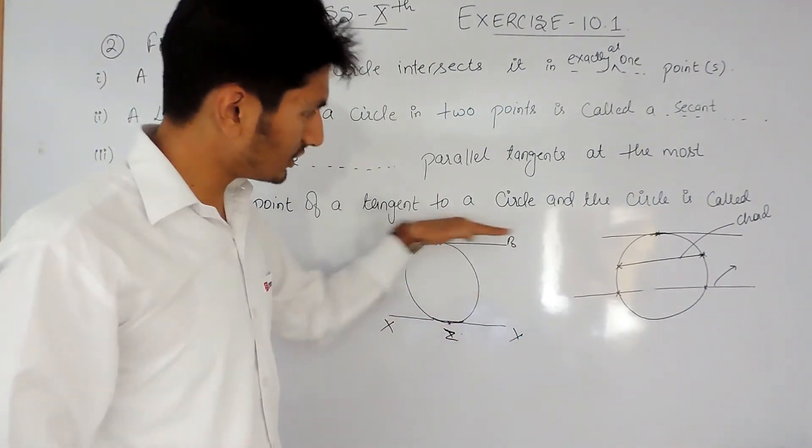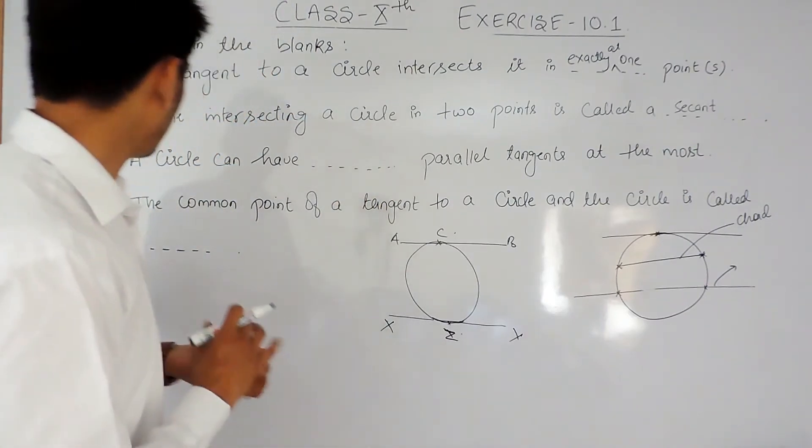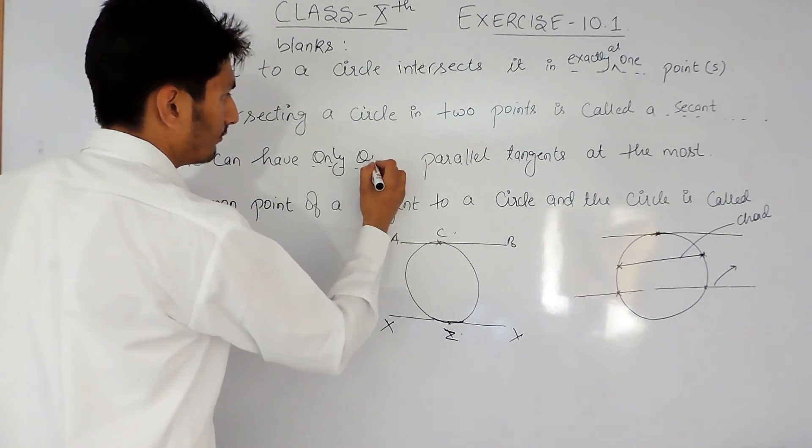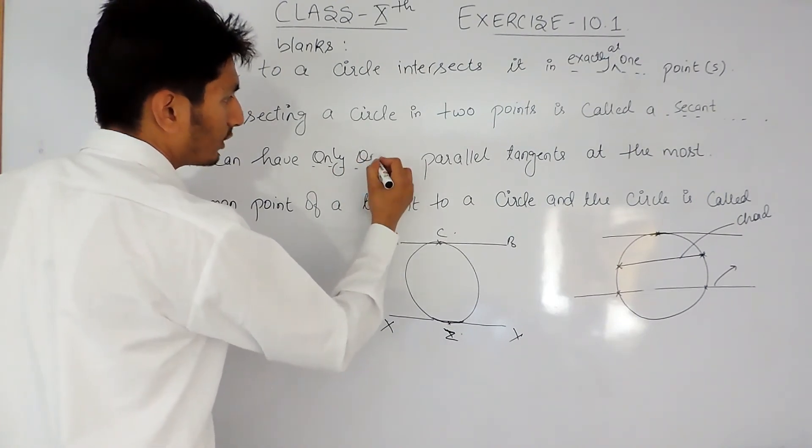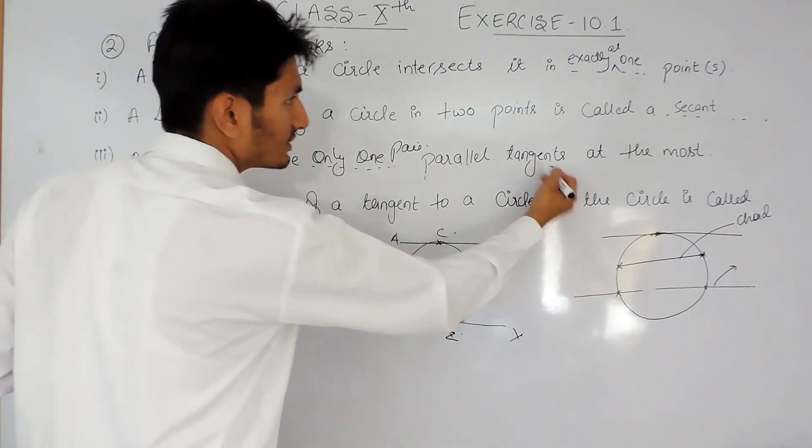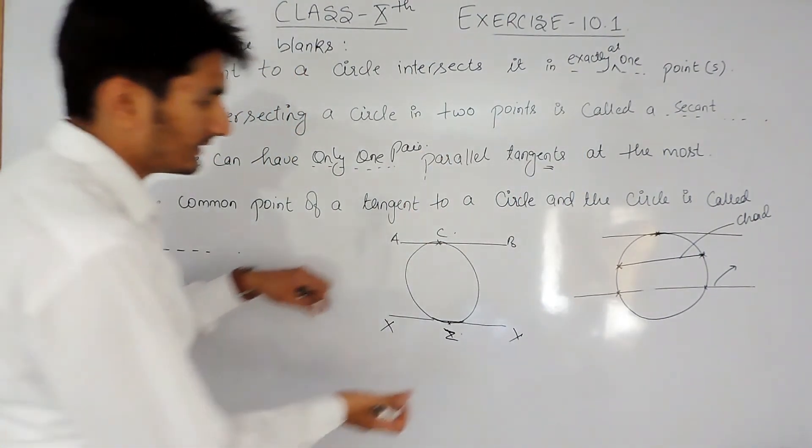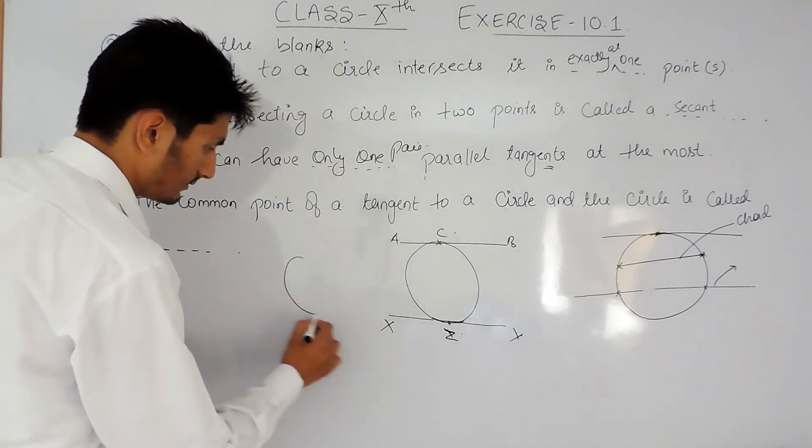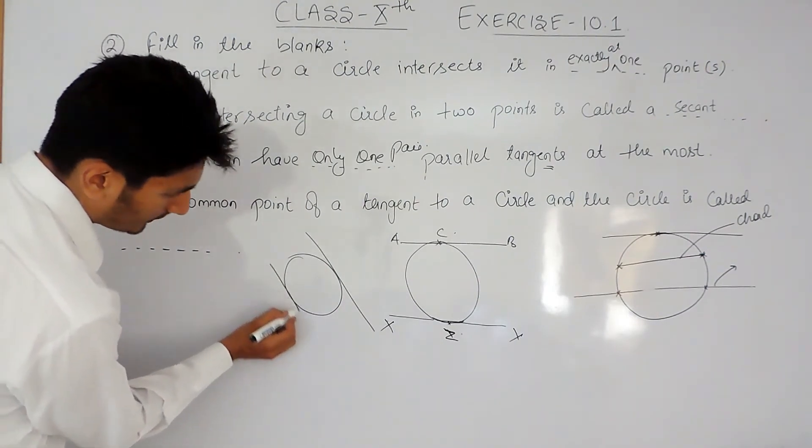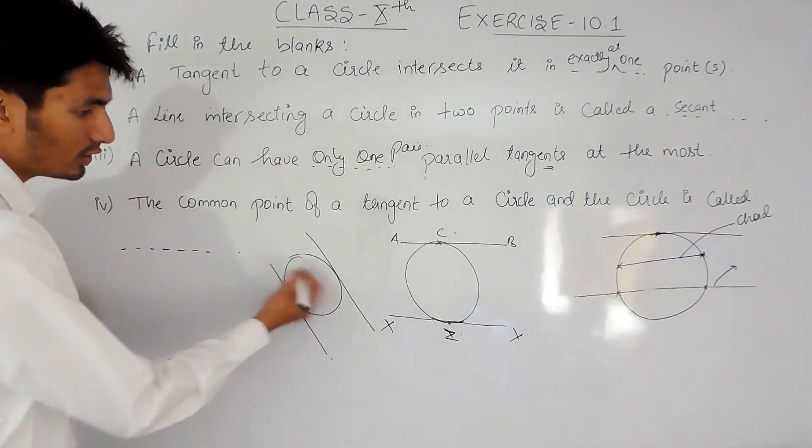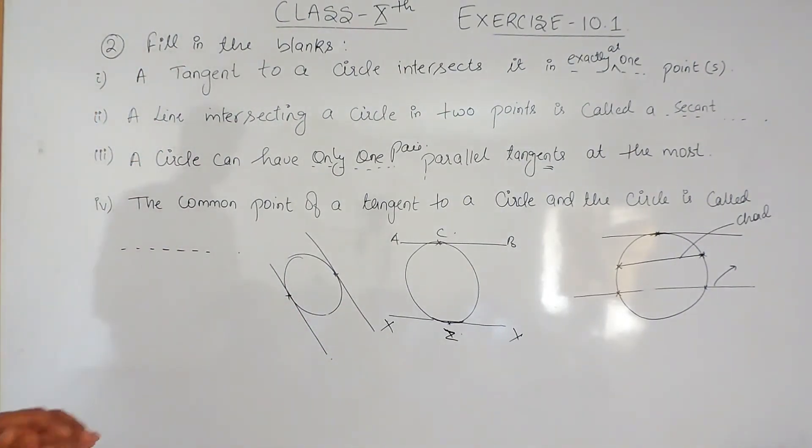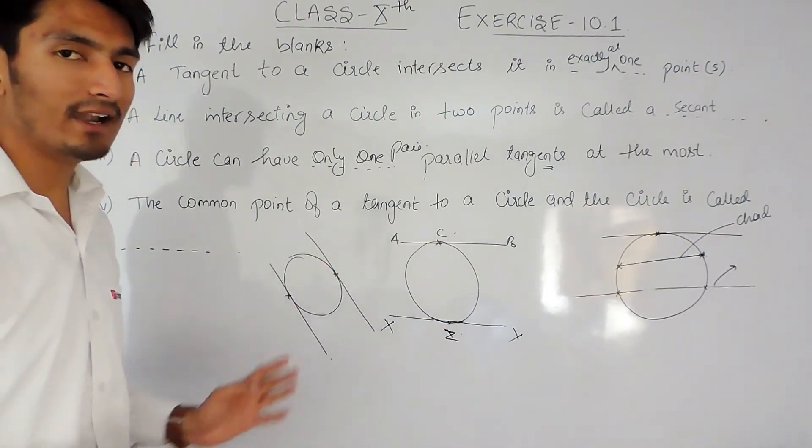So we can say that a circle can have only one pair of parallel tangents at the most. Wherever you draw a tangent, there is only one possible tangent parallel to it.